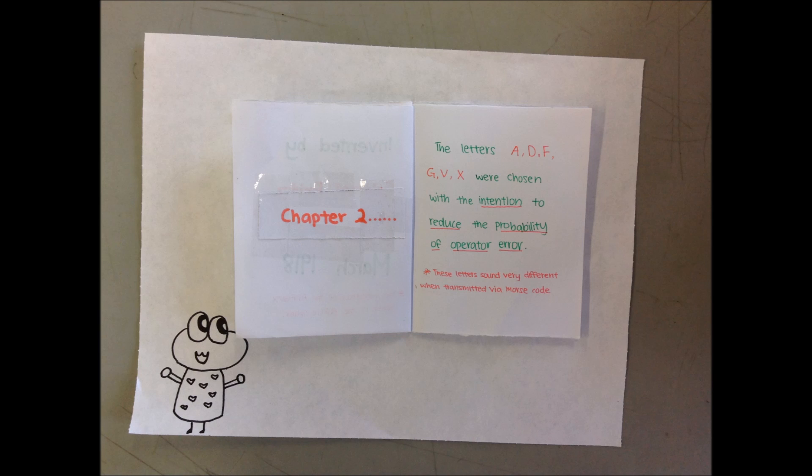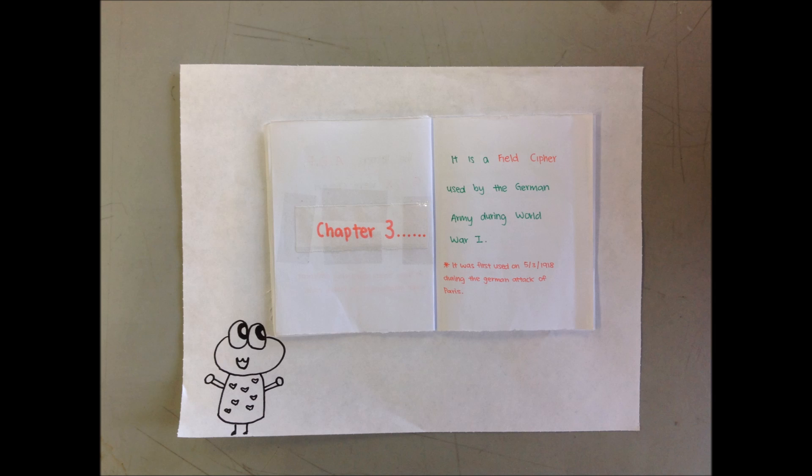The six letters ADFGVX were originally chosen with the intention to reduce the probability of operator error. This is because these six letters sound very different from one another when transmitted via Morse code. The ADFGVX Cypher was a field cypher used by the German army during World War I. It was first used on the 5th of March 1918 during the German attack of Paris.